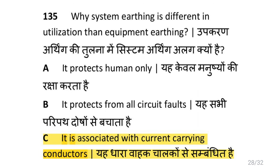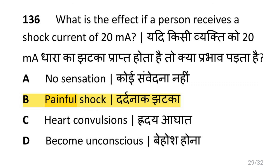Why is system earthing different in utilization than equipment earthing? That is because it is associated with current carrying conductors. What is the effect if a person receives a shock current of 20 mA? That is a very painful shock.